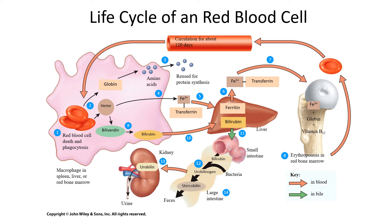Within the macrophage, the globin — the protein part of hemoglobin — is broken into amino acids. Those amino acids pass into the blood and travel throughout the body wherever needed, ready to be assembled into whatever protein a cell might require. Then we have the heme group. The heme is not a protein — it's made up of ring structures. The iron is taken off that heme group and the body goes to great lengths to recycle it, since there isn't much iron in your body but it's very important.